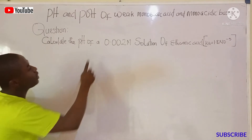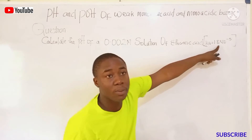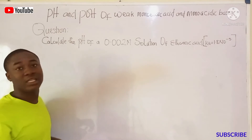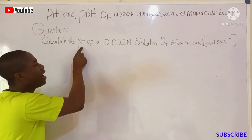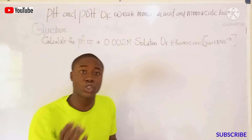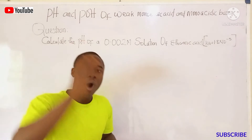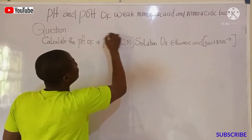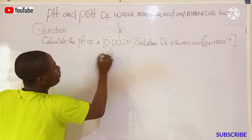The first question says: calculate the pH of a 0.002 molar solution of ethanoic acid, given Ka = 1.8 × 10⁻⁵. First, we identify the parameters: the compound is a weak acid — ethanoic acid is an organic acid, and all organic acids are weak acids. The concentration is 0.002 M, the Ka is 1.8 × 10⁻⁵, and they are asking us to get pH.